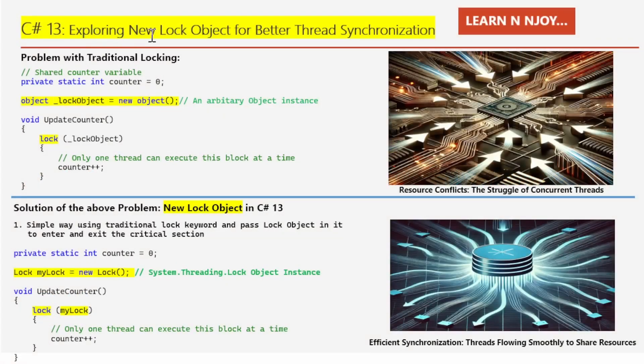C# 13: Exploring New Lock Objects for Better Thread Synchronization. First of all, we need to understand why this is important. Whether you are new to multi-threading or have years of experience, thread synchronization can be tricky. Managing access to shared resources between threads can sometimes lead to issues like deadlocks or performance bottlenecks. But with this new lock object in C# 13, things get a lot smoother and faster.